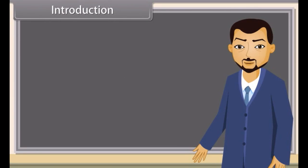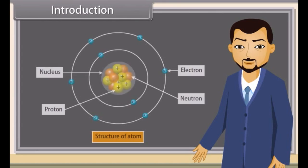Today I'll teach you the topic structure of atom. Atoms are the fundamental units of matter. Everything around us is made up of atoms. A typical atom consists of a nucleus of protons and neutrons with electrons orbiting this nucleus.